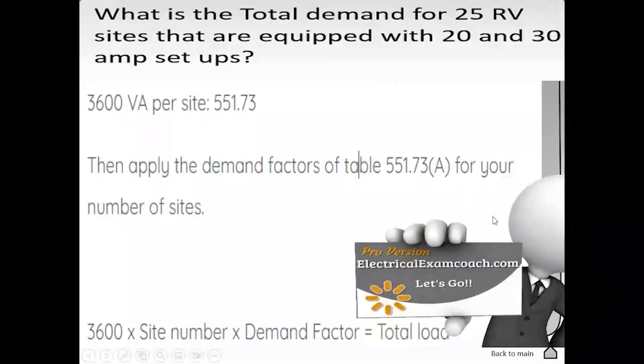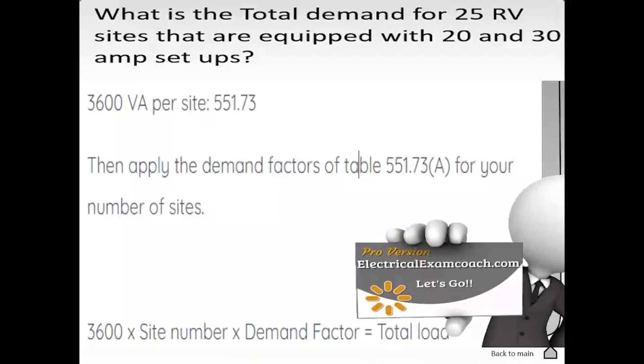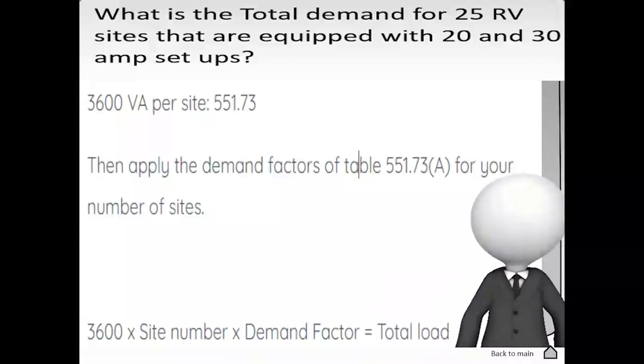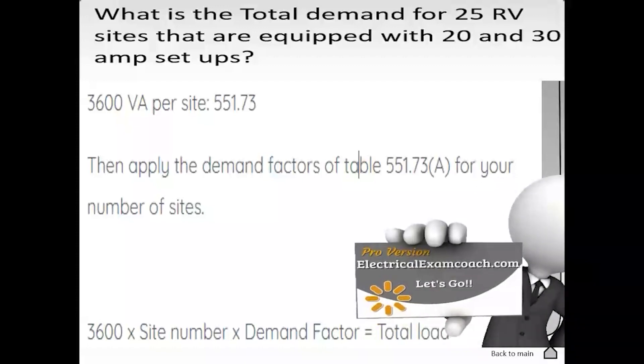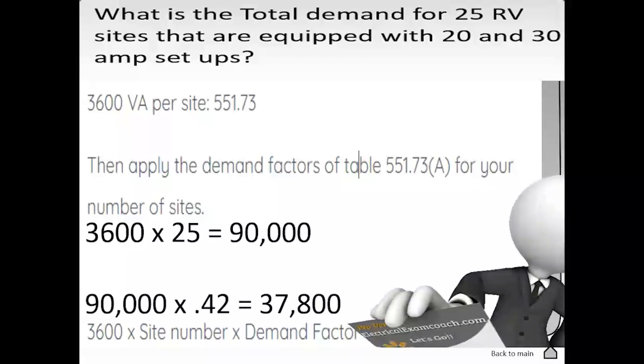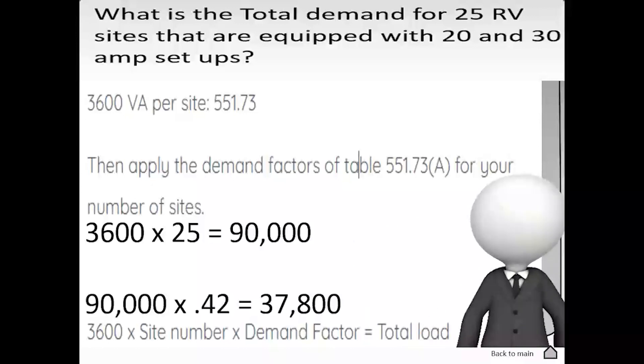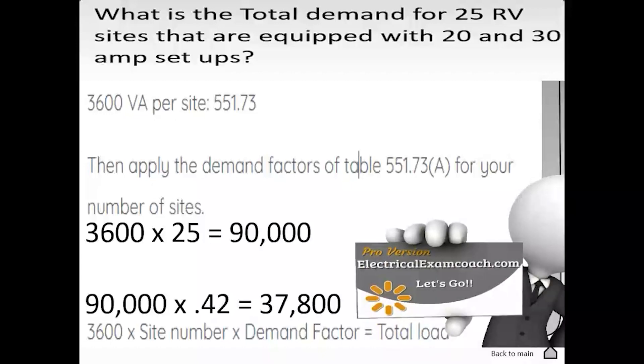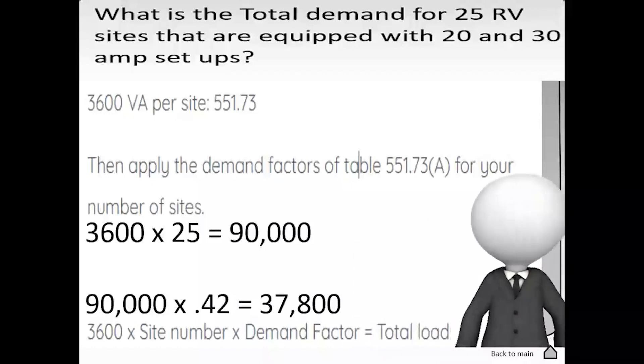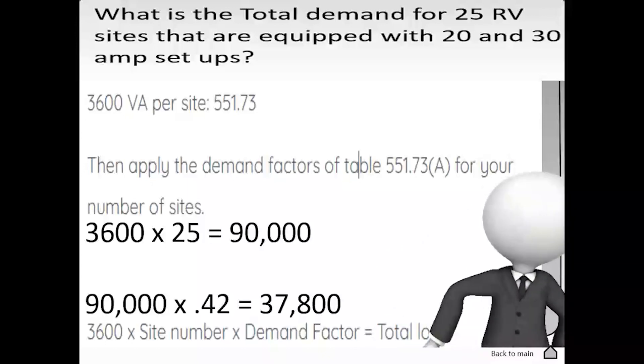To find this one, we're going to head to 551.73. It's going to let us know for RV sites that are equipped with a 20 and a 30 amp setup that you have to calculate it at a minimum of 3,600 VAs per site. But we can't stop there. We have to head to the table and we can actually apply a demand factor for this load. So we take our 3,600 per site, multiply it by our 25 sites and that gives us 90,000 VAs. Now we can go down to our table and check the demand factor for 25 and it ends up being 42%. So we take our original load multiplied by our demand factor and that gives us a new reduced load of 37,800. Great job.